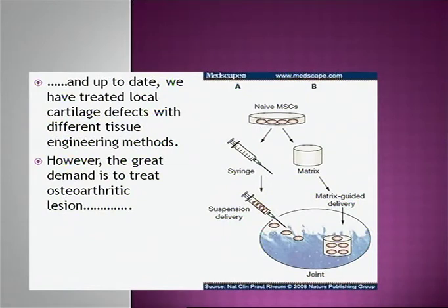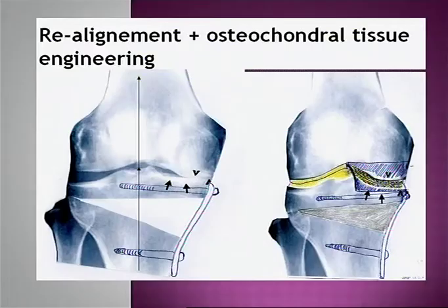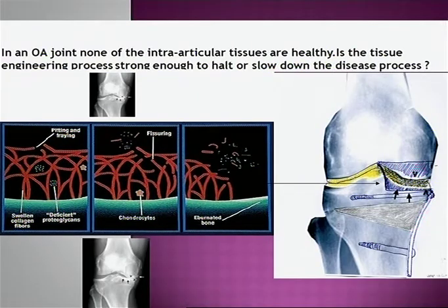Up to date we have treated local cartilage defects, but patients really want better treatment for osteoarthritic lesions. Could we do something with this? It looks difficult for biological repair — you may do an osteotomy, put in a scaffold with bone marrow cells and chondrocytes. But you have to remember that osteoarthritis is an organ disease, meaning the disease process will also affect the cartilage area we have implanted.